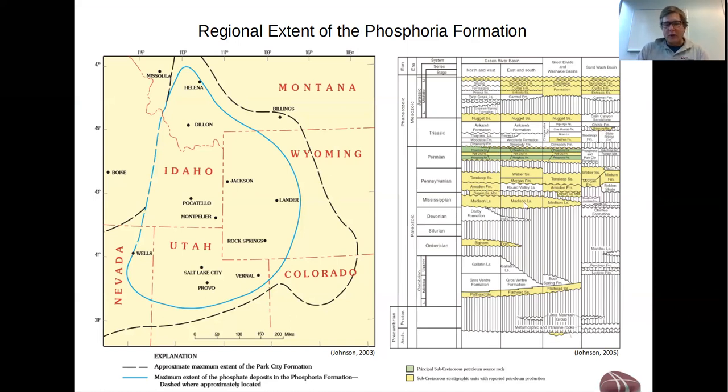As you can see, the phosphoria has charged most, if not all, of the porous permeable siliciclastic and carbonate strata that are below the Cretaceous in these basins. We're going to look at the differences in the geochemistry between these phosphoria oils and the Cretaceous oils in the overlying petroleum system next week when we start looking at some of the geochemistry.